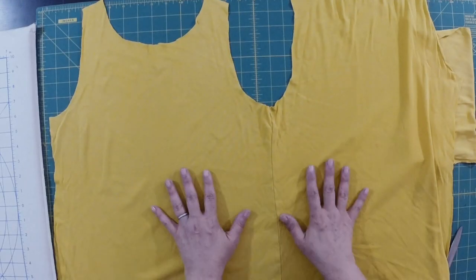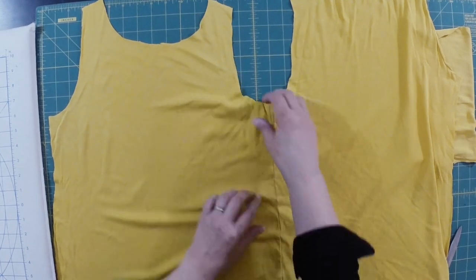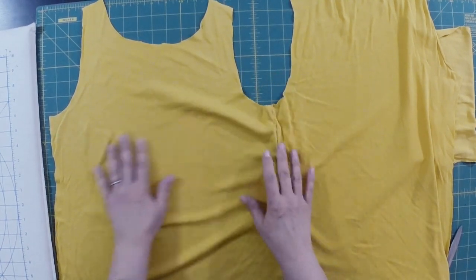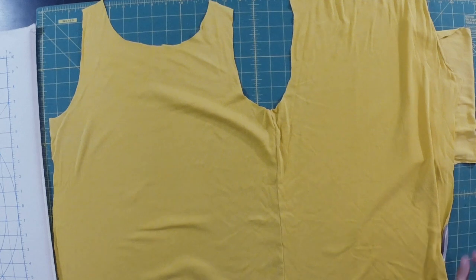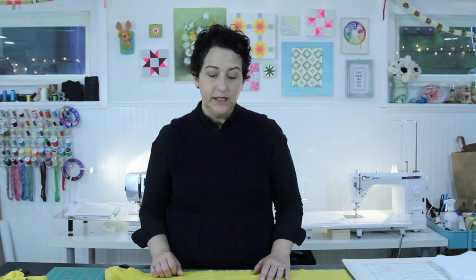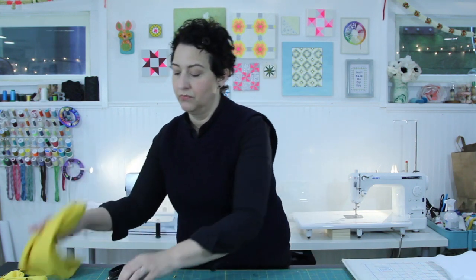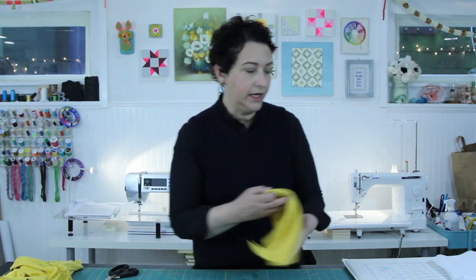But one thing that you need to do is because knits are stretchy and stretchy stuff does not work well in quilts, you're going to need to iron fusible interfacing to the back of this fabric. And I will put a link to what I use. It's a lightweight fusible interfacing by Pellon. And I'm just going to show you really quickly how I use it.